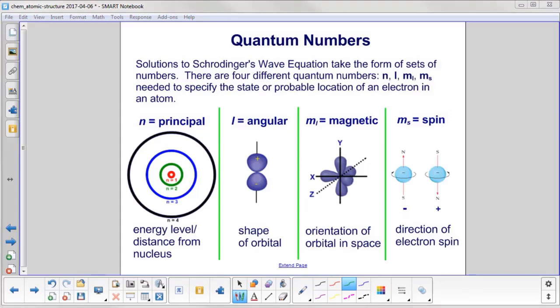When you solve Schrödinger's wave equation—again, we're talking college level—it takes the form of sets of numbers. Earlier we talked about four different quantum numbers: n, l, ml, and ms. These tell you the state or probable location of an electron.